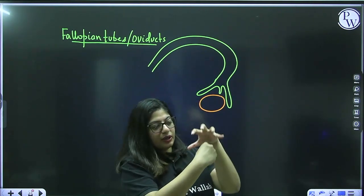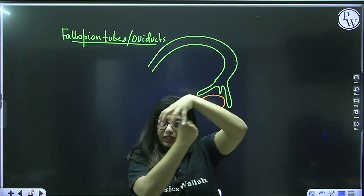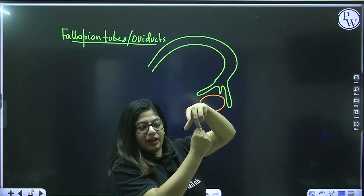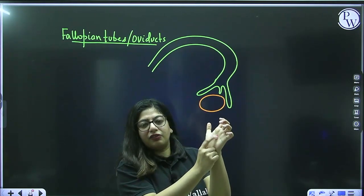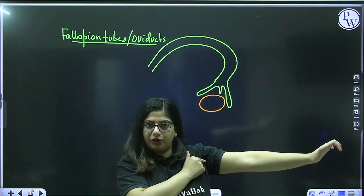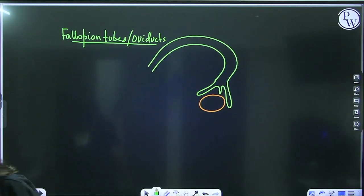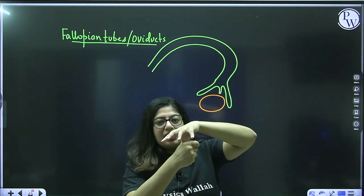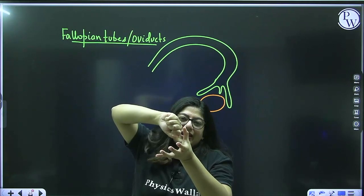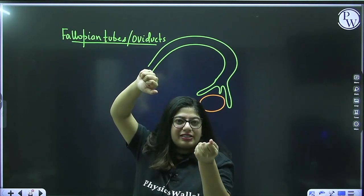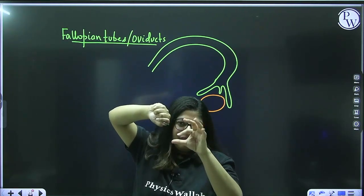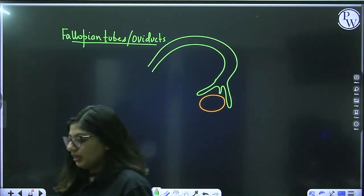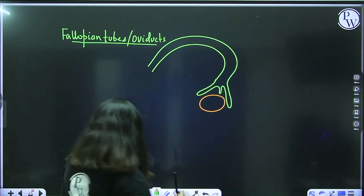The ovary is not touching the fallopian tube. When the ovary releases the egg, the fimbriae catch the egg and it enters through the ostia into the fallopian tube. The infundibulum is funnel-shaped and present near the ovary; the fimbriae are finger-like projections that collect the released ovum.